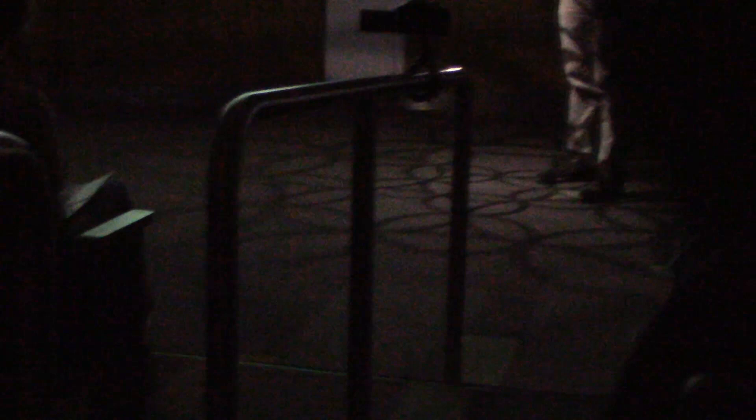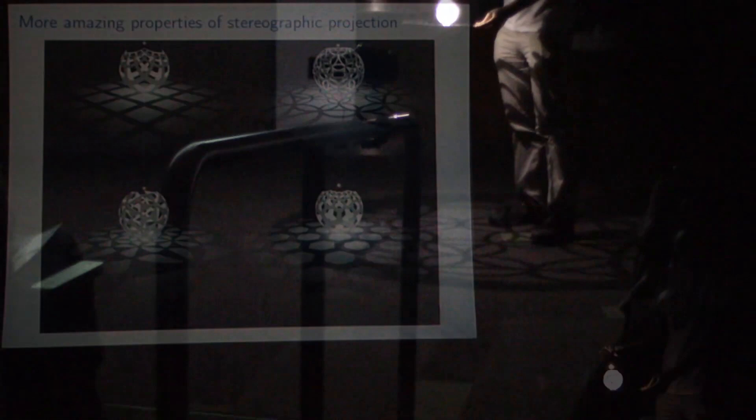But what's strange is that it doesn't preserve the centers of the circles. The larger circles on the outside — if you look at the pointy pentagon inside of that circle, it's very distorted. The center of the circle is not really near the center of the pentagon. So stereographic projection knows that circles need to go to circles, but it forgets about where the centers go.